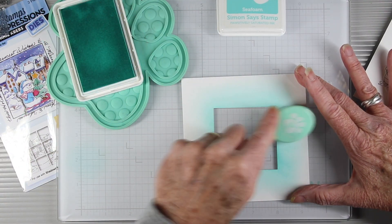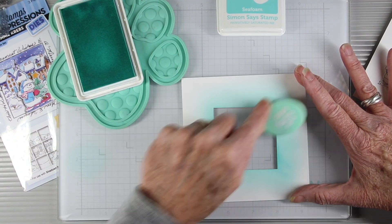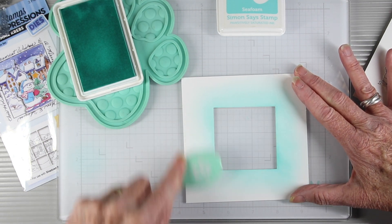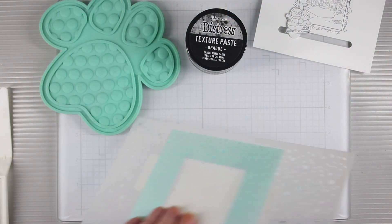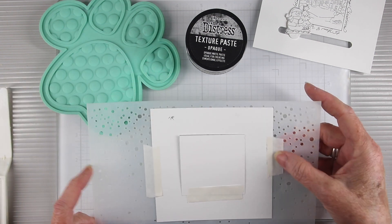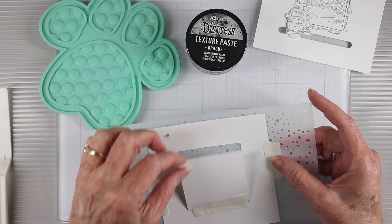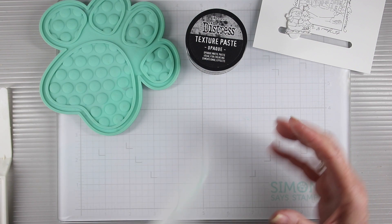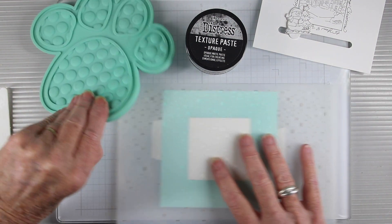I'm using the simonsaysstamp seafoam positively saturated ink and I'll be covering the entire surface of the frame. Next, with my very low-tech tape, I've taped my frame to the back of the stencil and I also use that reserve piece from the die cutting to fill in the center.